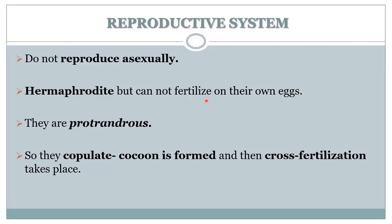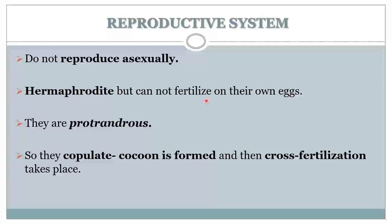While in asexual reproduction, the male and female gametes do not fuse. In an earthworm, the reproduction is sexual. The earthworms are hermaphrodites, meaning both the male and the female sex organs are present in the same organism.